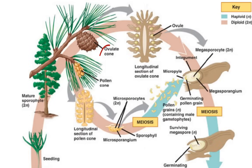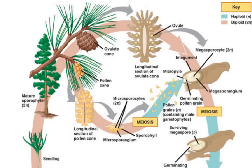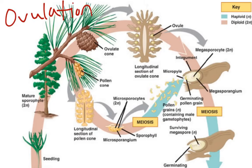Now let's focus on the ovulate cone. Inside the cone — if you could cut through it in a cross-section — you will see that it has lots of ovules. Those scales you typically see on the pine cone each have an ovule in them. Any time you see 'ovule,' you need to be thinking of eggs. For example, in mammals we talk about ovulation, which is when an egg is released from the ovary and gets ready to be fertilized. So 'ovule' means we need to be thinking about eggs and the female reproductive structures.